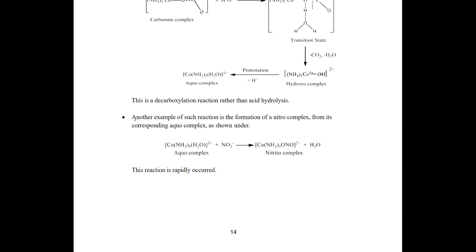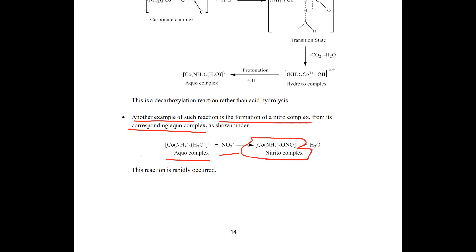Another example of ligand substitution without metal-ligand bond breaking is the formation of a nitro complex from its corresponding aquo complex. When the cobalt aquo complex interacts with a nitro ligand, a nitro complex is formed. This is another example of ligand substitution without metal-ligand bond breaking, and you can explain the mechanism of how such reactions happen.